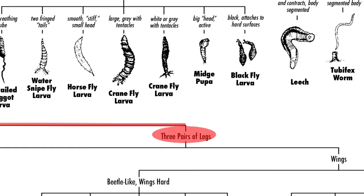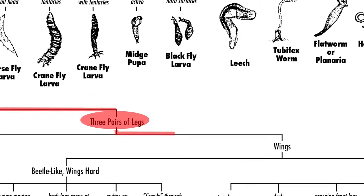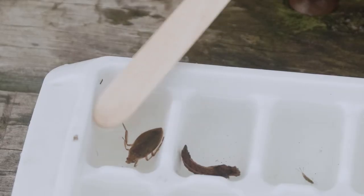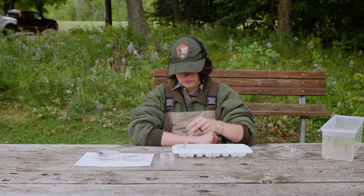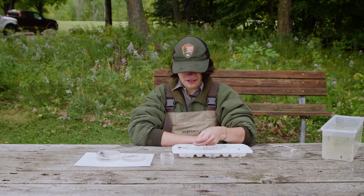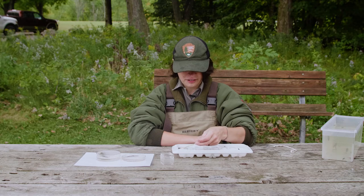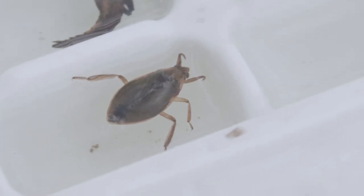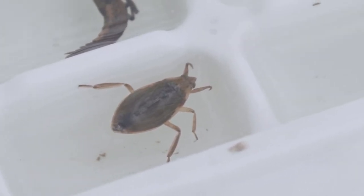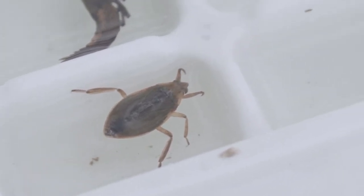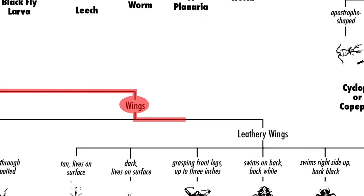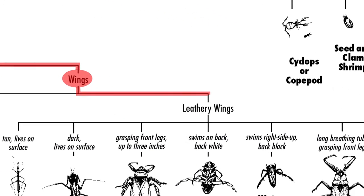The next question is wings. Is it a beetle? Nope, it does not have a hard kind of shell on its back. The next one is: does it have leathery wings? And if you look closely, yes, it does.